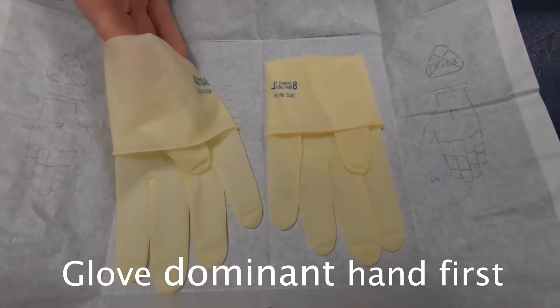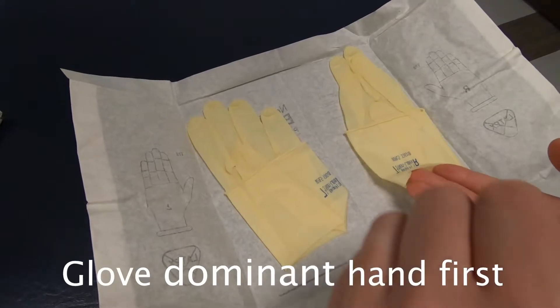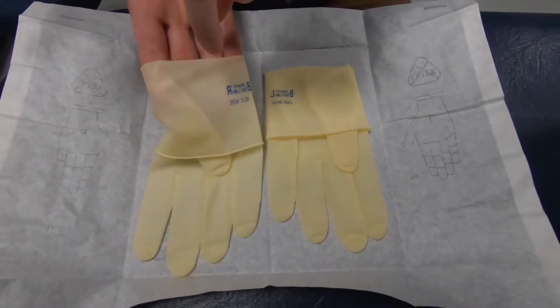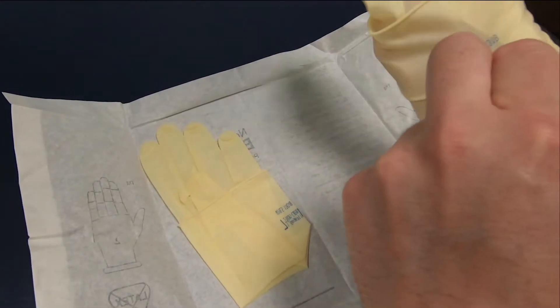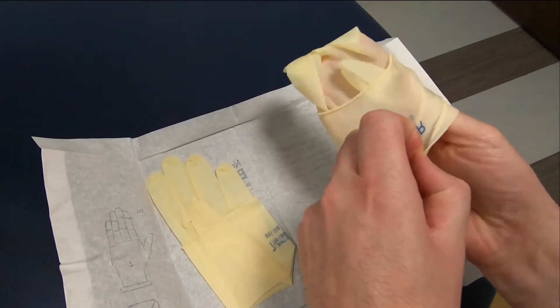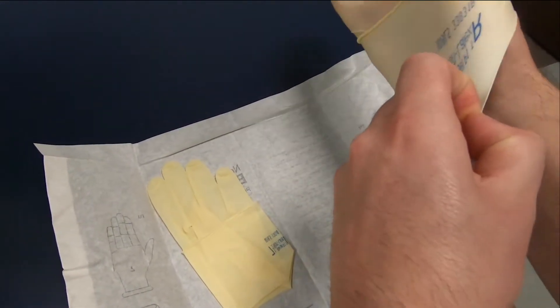Typically you're going to glove your dominant hand first. Slide this hand under here or you can use your non-dominant hand to pinch and assist. I'm grabbing from the inside of the glove, not touching the outside. I'm sliding it over my hand.